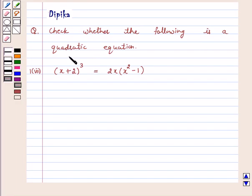Check whether the following is a quadratic equation: x plus 2 whole cube is equal to 2x into x square minus 1. Let's start the solution.